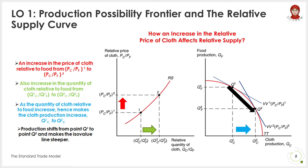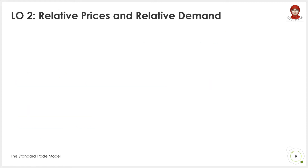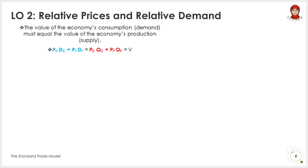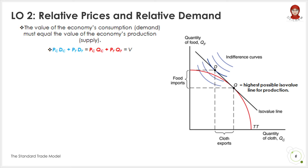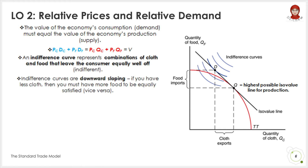Thus far, we discussed how relative prices affect the relative supply curve and production in the economy. Now we will see the effects of relative prices on relative demand. The value of an economy's consumption, which is demand, has to be equal with the value of its production, which is supply. The economy's choice of point on the ISO value line depends on the taste of its consumers — accordingly, the demand of consumers. The taste of an individual can be represented graphically by a series of indifference curves. An indifference curve traces a set of combinations of clothes and food consumption that leaves the individual equally well off. As illustrated in this figure, indifference curves are downward sloping, which means that if you have less clothes, then you must have more food to be equally satisfied, and vice versa.